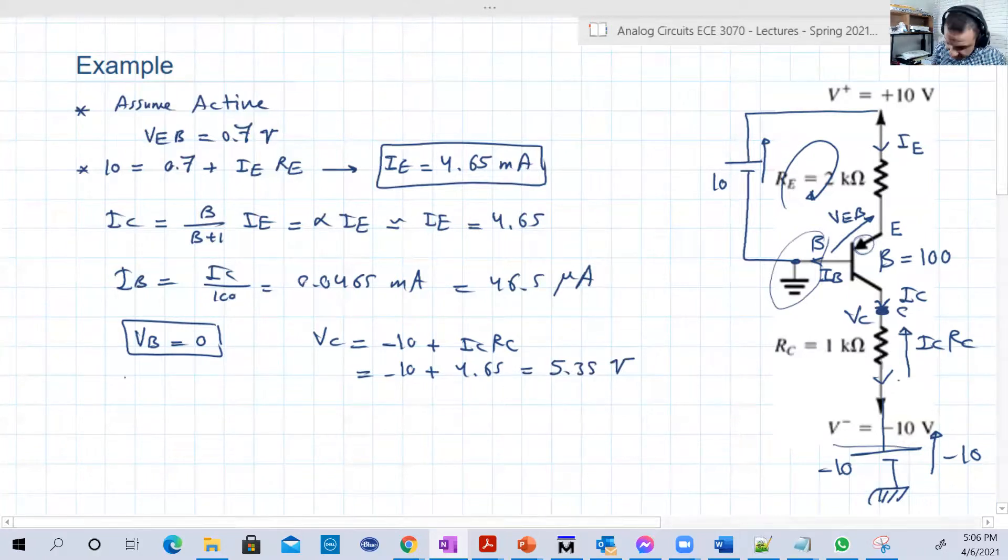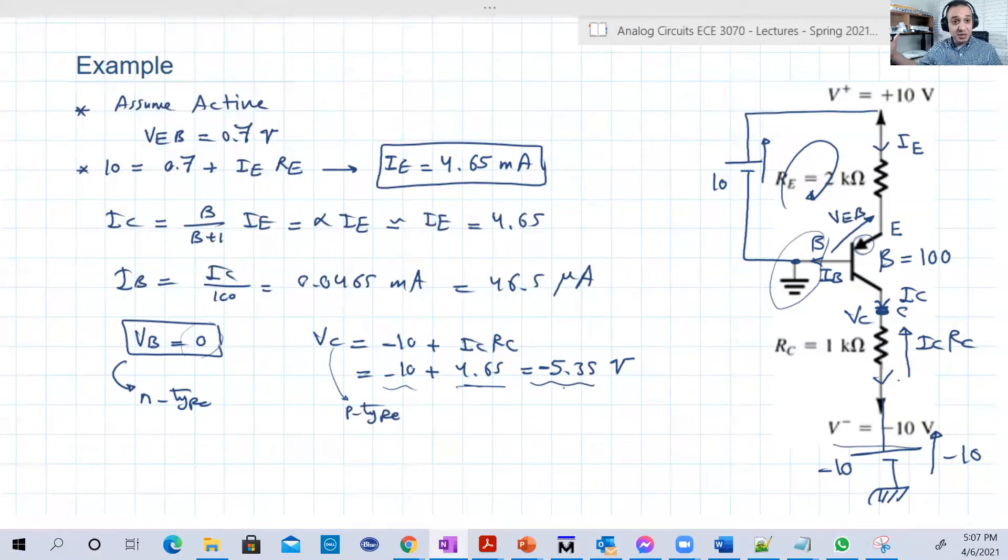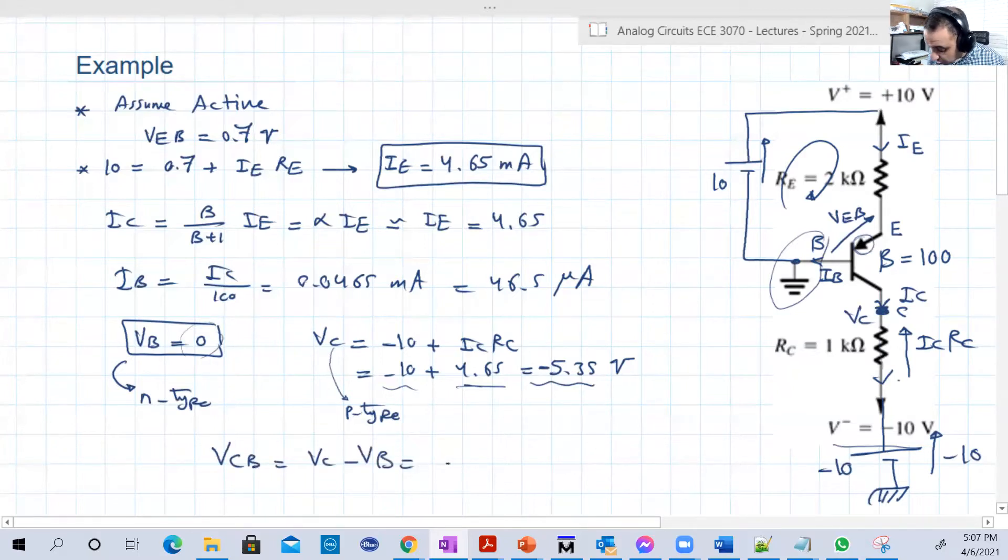Remember the base is N type and it's connected to 0, and the collector is basically P type and it's connected to a negative voltage. So the voltage on the base, which is N, is greater than the voltage on the collector, which is P, so it's a reverse junction. Or you can say that VCB, VC minus VB, equals minus 5.35 minus 0, which is minus 5.35, so this is less than 0, so J2 is reverse basically, and the assumption is correct.